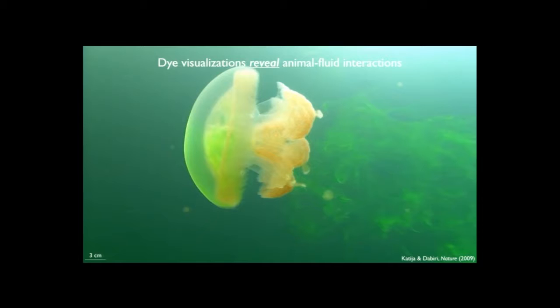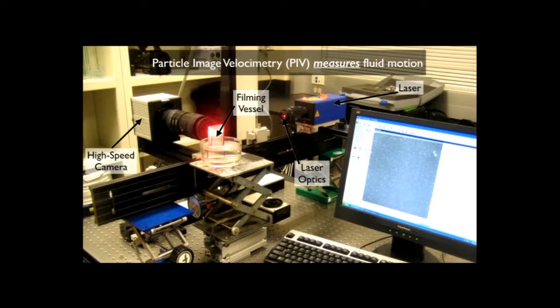There is a technique widely used in the laboratory — in the engineering and biomechanics literature — called Particle Image Velocimetry. It's a technique that allows quantitative measurements of fluid motion. It really requires just two major components: a camera imaging the flow, and a source of light — in this case a laser — with optics in front to create a light sheet. If particles suspended in the water happen to be neutrally buoyant, you can infer the motion of fluid from the motion of these particles.